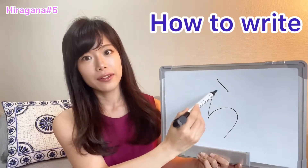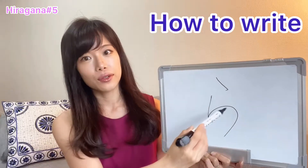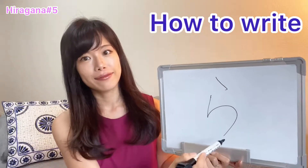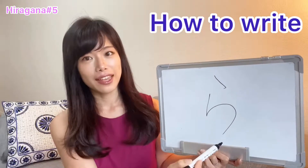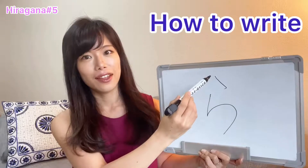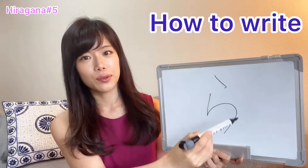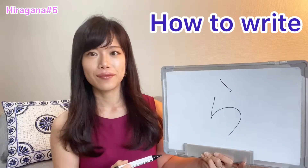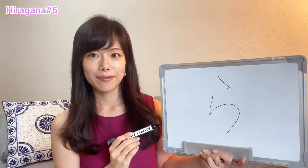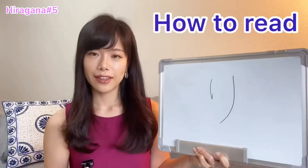How do you write ra? One, Two. Once again. One, Two. Ra.